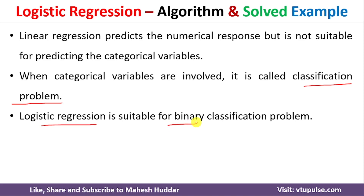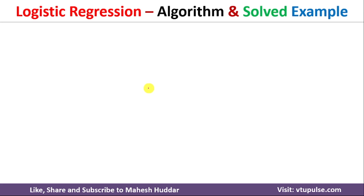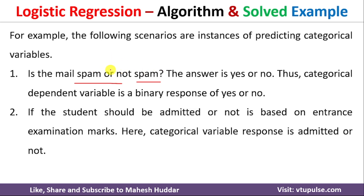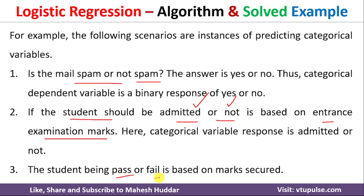If the class or target variable contains two possibilities, we can use logistic regression. If there are more than two possibilities, we cannot use it. For example: predicting whether a given mail is spam or not spam — that's binary, so logistic regression applies. Similarly, predicting whether a student should be admitted or not based on entrance exam marks has two possibilities. A third example is predicting whether a student will pass or fail in an examination based on marks secured — again, only two possibilities.